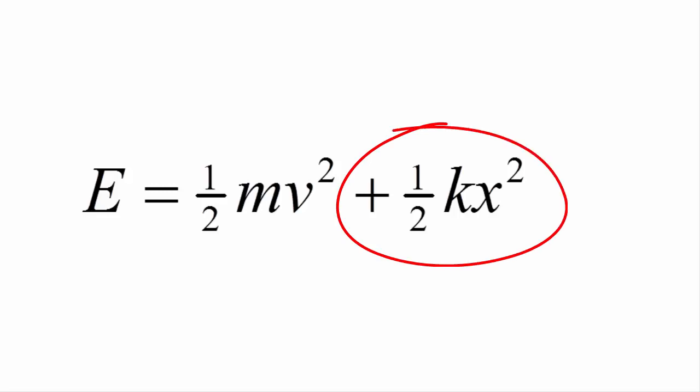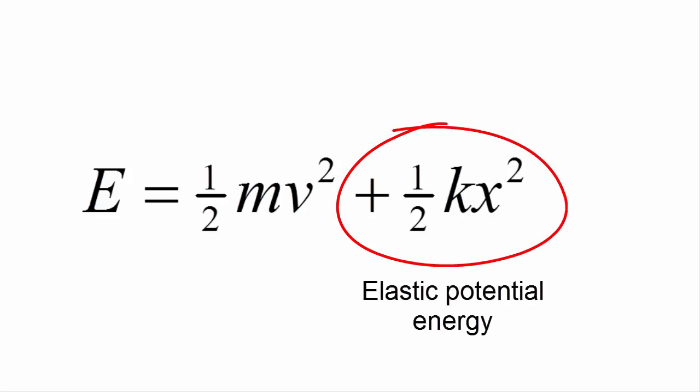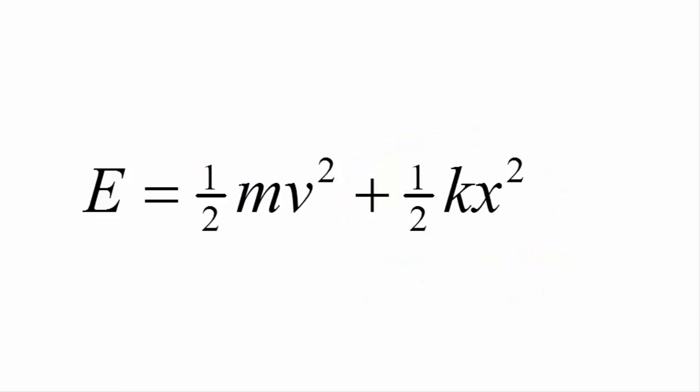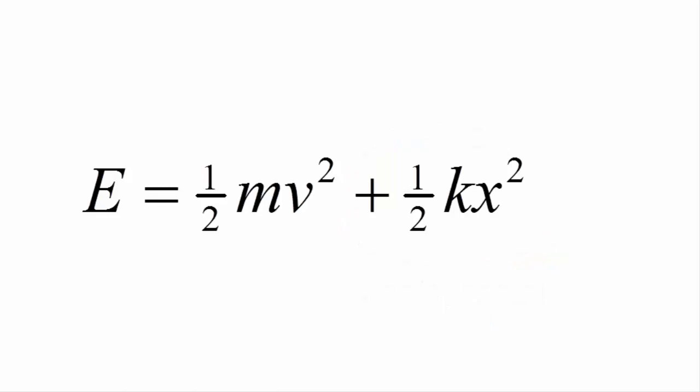The term half kx squared is called the elastic potential energy. It's the energy stored when you do work to move the object from its equilibrium position. So the total energy of an oscillator at a position x is given by the sum of its kinetic energy and its potential energy at that position.